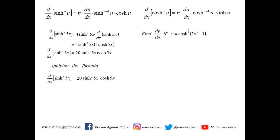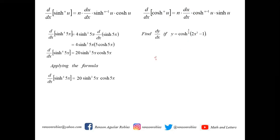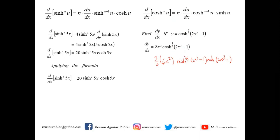For dy/dx if y = cosh^(4/3)(2x³ - 1): n = 4/3, times the derivative of 2x³ - 1 which is 6x². Then copy cosh(2x³ - 1) raised to 4/3 - 1 = 1/3, and affix sinh(2x³ - 1). Simplifying: (4/3)·6x² = 8x², giving dy/dx = 8x²·cosh^(1/3)(2x³ - 1)·sinh(2x³ - 1).